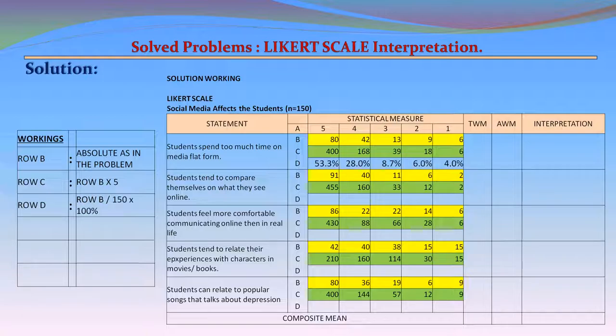Row D is calculated as Row B divided by 150, multiplied by 100%. For Statement 1, the percentages are: 53.3%, 28%, 8.7%, 6%, and 4% for scales 5 to 1. For Statement 2, Row D percentages are: 60.7%, 26.7%, 7.3%, 4%, and 1.3%.